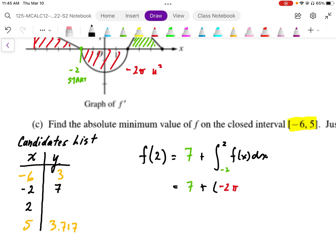So that represents the area, or the displacement. So we end up with 7 minus 2π, and 7 minus 2π works out to be approximately... I'll just write this out as 7 minus 2π. This is approximately 0.717. So I'm going to put that in my candidates list, 0.717.